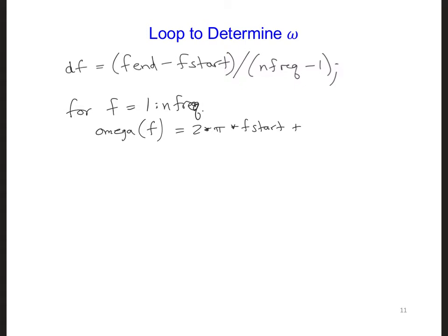And now we need to add on to that another 2 times pi times df for every new frequency as we go up. So I'm going to take f minus 1 here so that the first omega value corresponds to f start. And then we can end the loop. If you wrote your loop differently, that's fine as long as it produces the correct values.